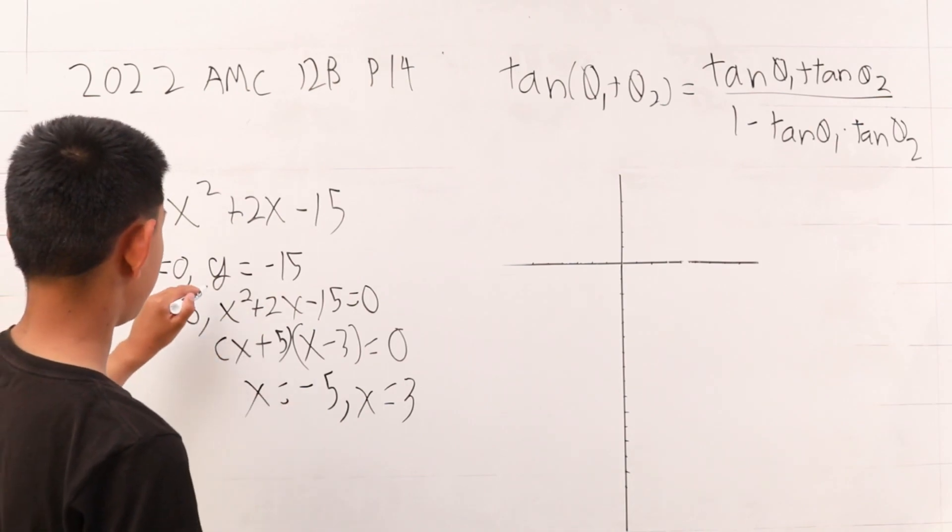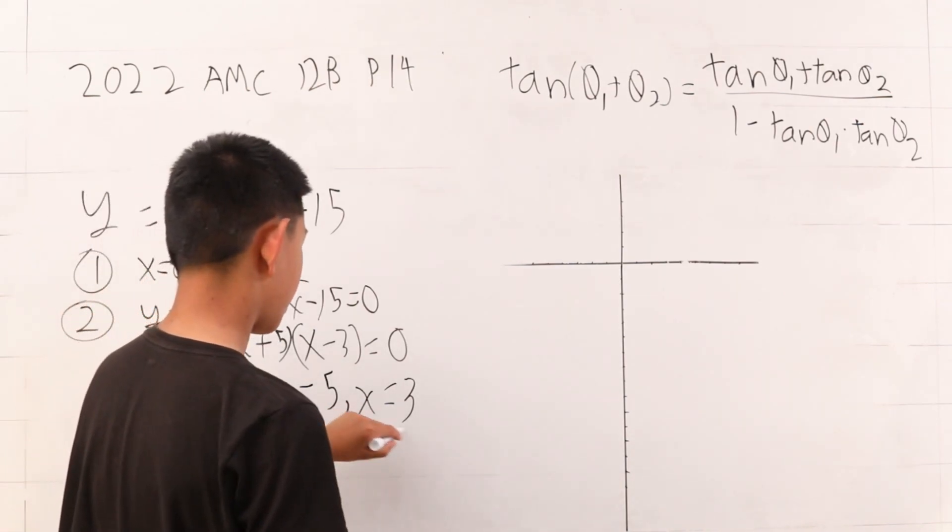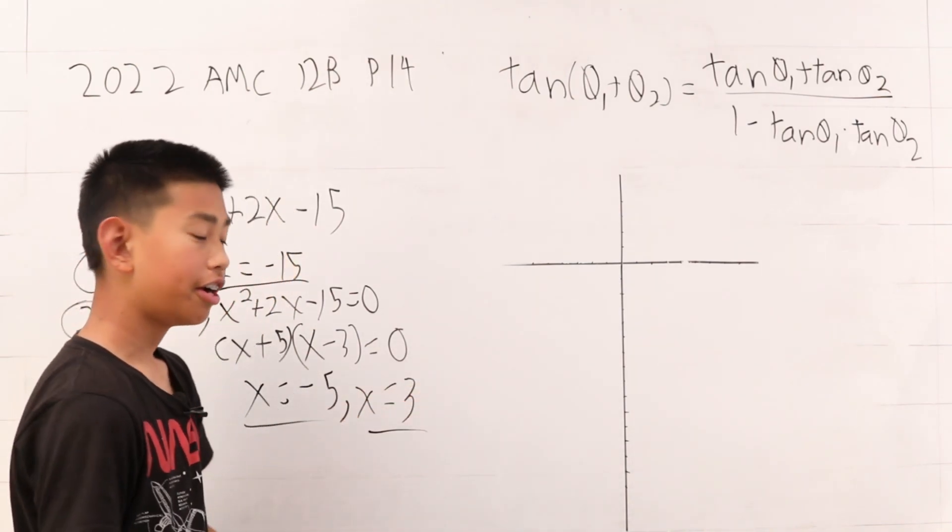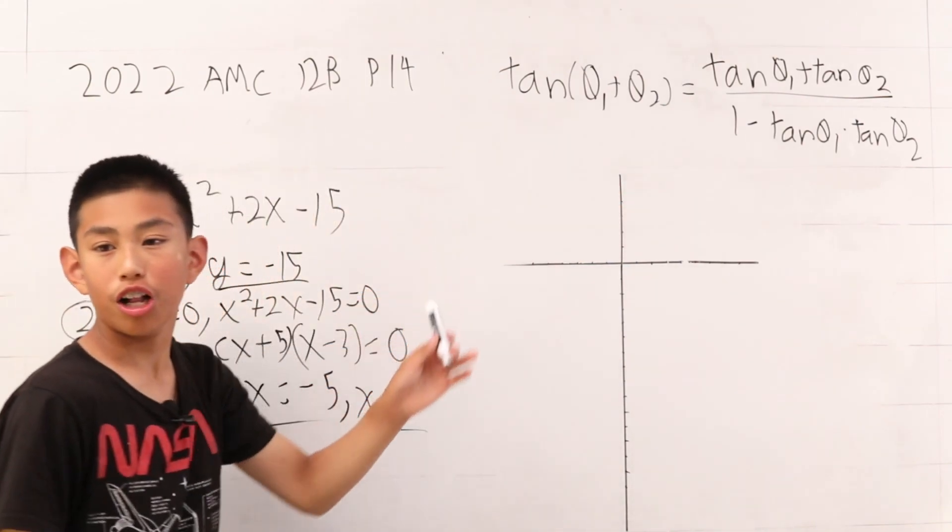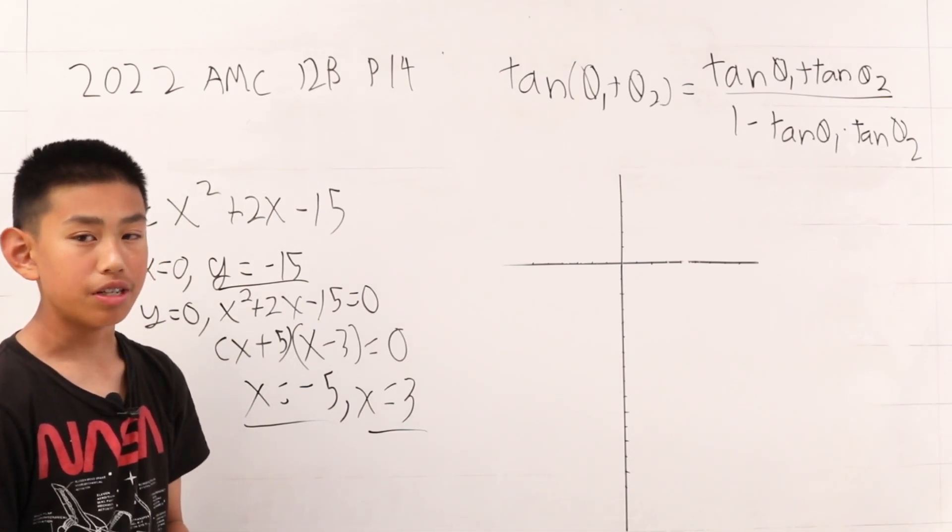So, we have three points here: y is negative 15, x is negative 5, and x is 3. We can plot those points on this coordinate plane here and connect the dots to form a triangle and use this equation to help us find the tangent of angle ABC.